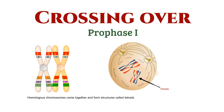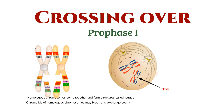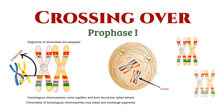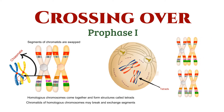Within these tetrads, something extraordinary happens. Chromatids of homologous chromosomes may break and exchange segments. These exchanges occur at points called chiasmata. At these chiasmata, segments of chromatids are swapped, resulting in a recombination of genetic material.